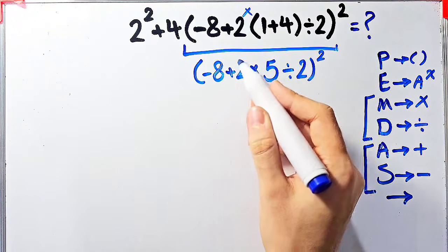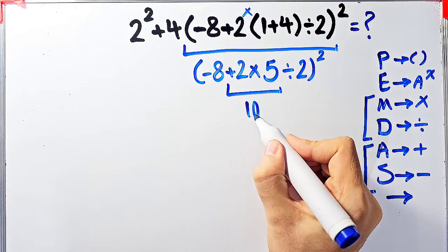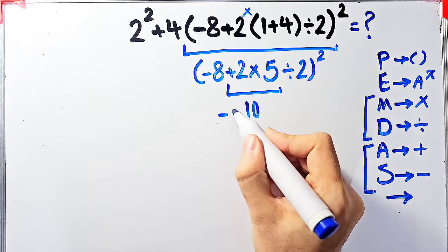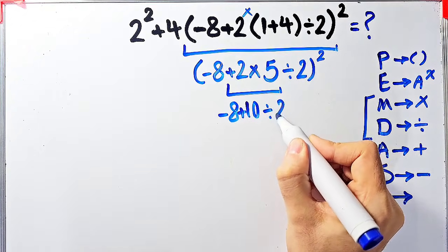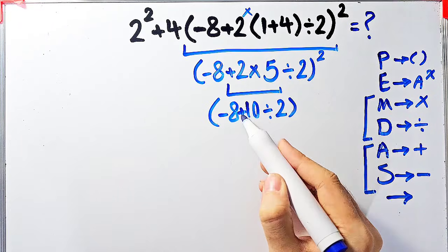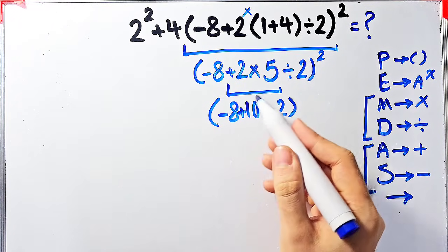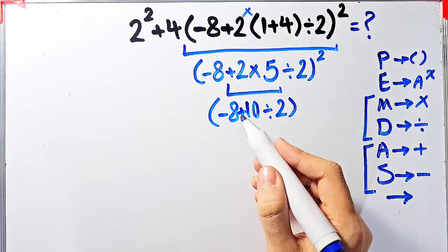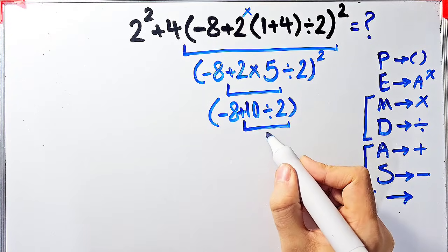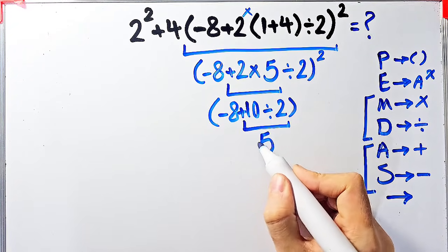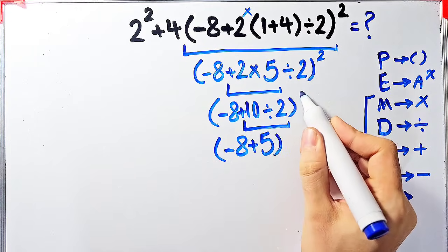Now we have addition, multiplication, and division. We do the multiplication first: 2 times 5 equals 10. Now inside the parentheses we have negative 8 plus 10, then divided by 2. We have addition and division — first we simplify the division because division has higher priority than addition. 10 divided by 2 equals 5.